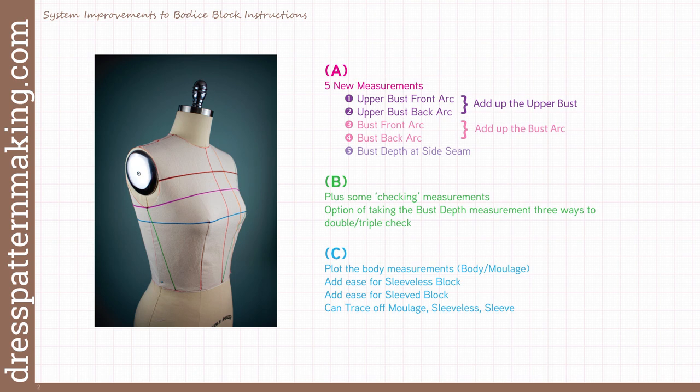The key thing with my new system is that we're going to plot the body measurements and then add the ease for the sleeveless block, and then add ease for the sleeve block. You can trace off either, or all — the moulage, the sleeveless and the sleeved block. It's up to you. You can see quite clearly where the ease is, so you could also increase or decrease it if you want to.